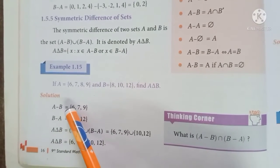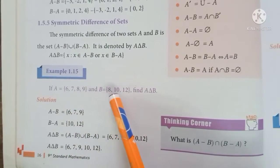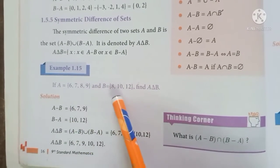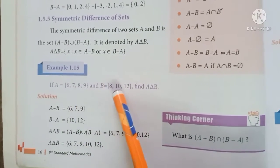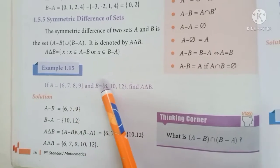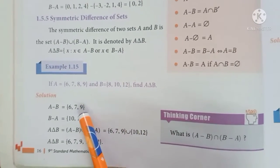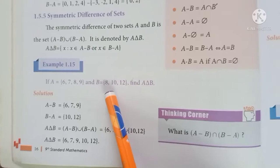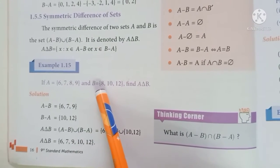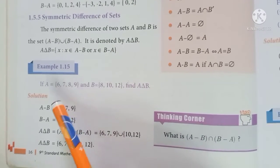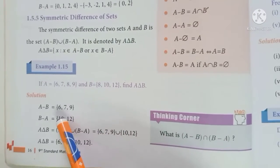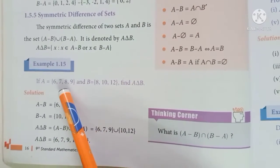First find A-B. Looking at A, 6 is not in B, 7 is not in B, 8 is in both, 9 is not in B. So A-B equals {6, 7, 9}. For B-A, looking at B, 8 is in both, 10 is not in A, 12 is not in A. So B-A equals {10, 12}.